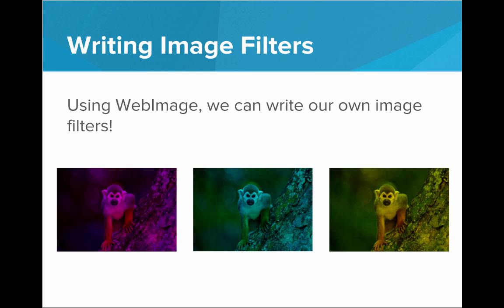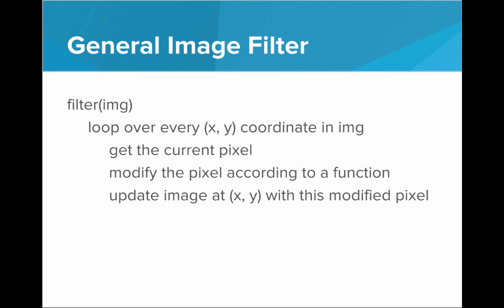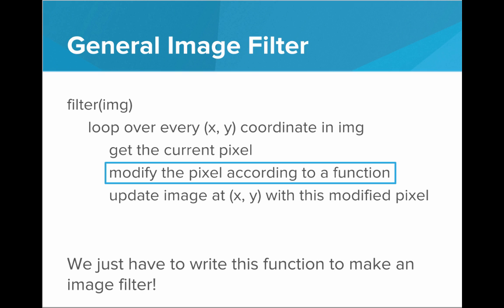Using WebImage, we can easily write our own image filters and create cool effects. Every image filter we write is going to follow a very common format — this is the general image filter in pseudocode. We write a function that takes an image, loop over every x, y coordinate in the image, get the current pixel at those coordinates, modify that pixel according to a function, and then update the image at x, y with this new modified pixel. What makes different filters different is just this part — modifying the pixel according to a function. Some functions might brighten the pixel, some might darken it.